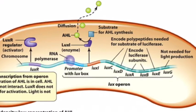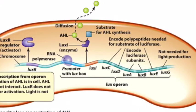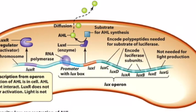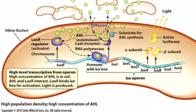Transcription stops till we bind the Lux box. With just a few cells AHL can leave, but why'd we have a quorum?